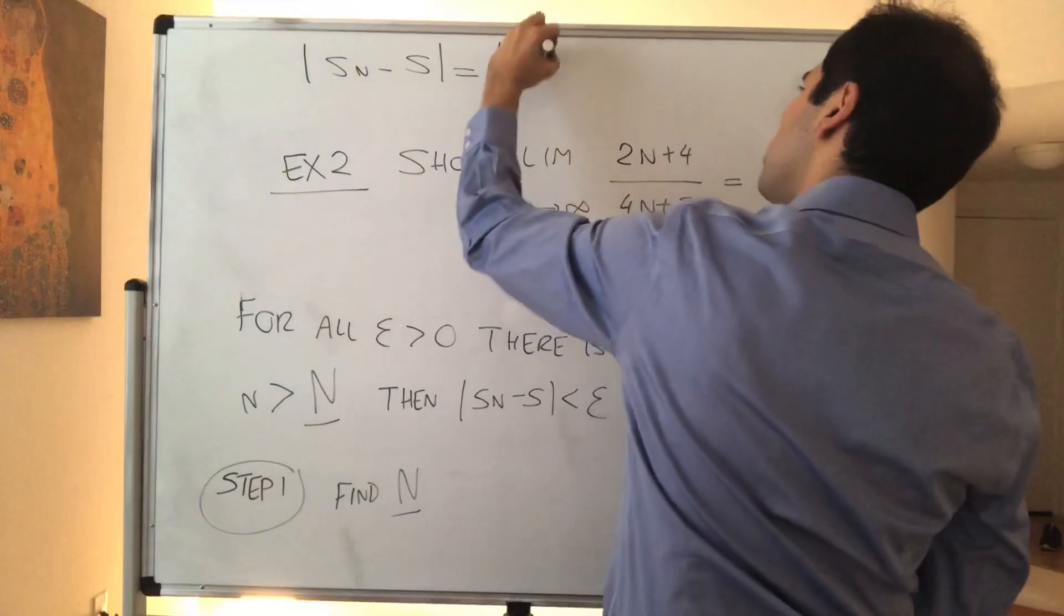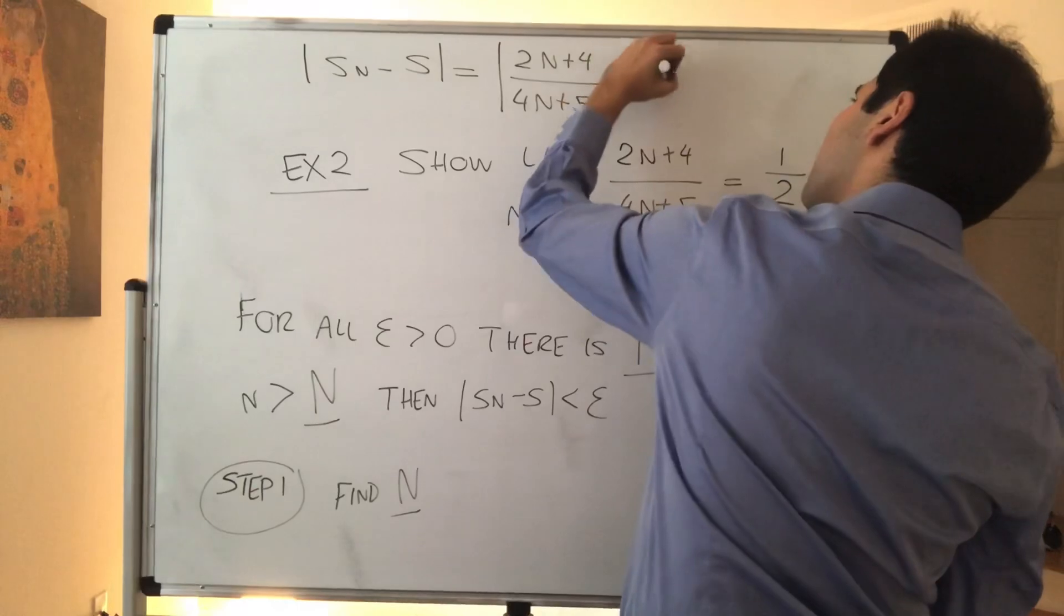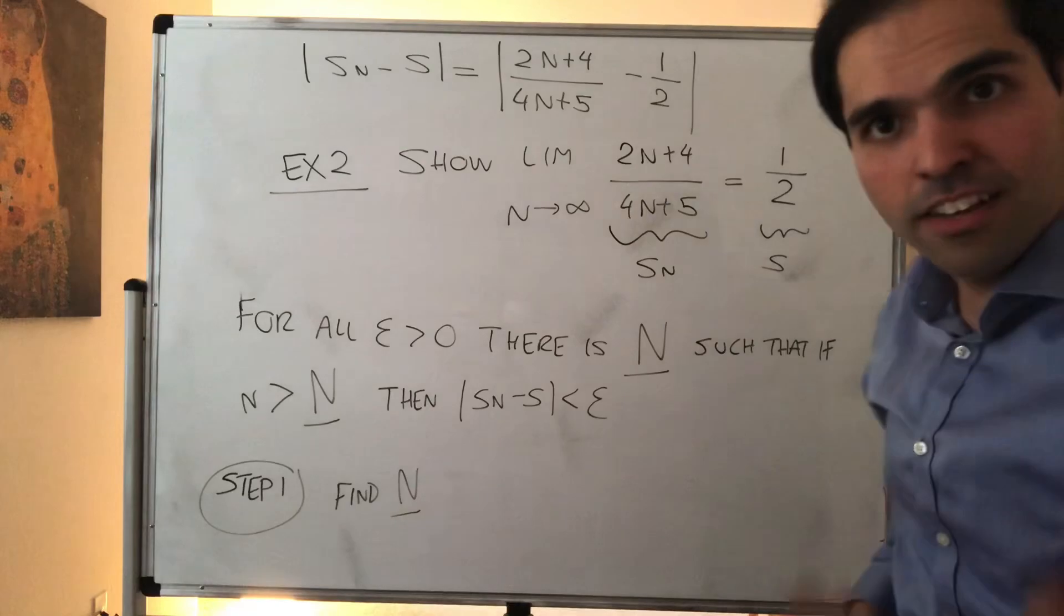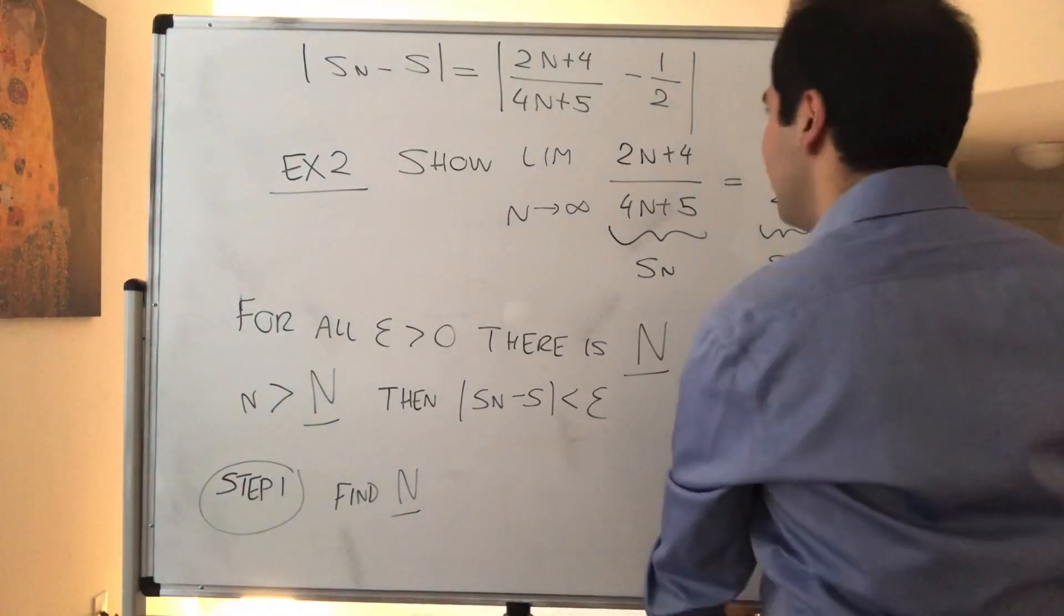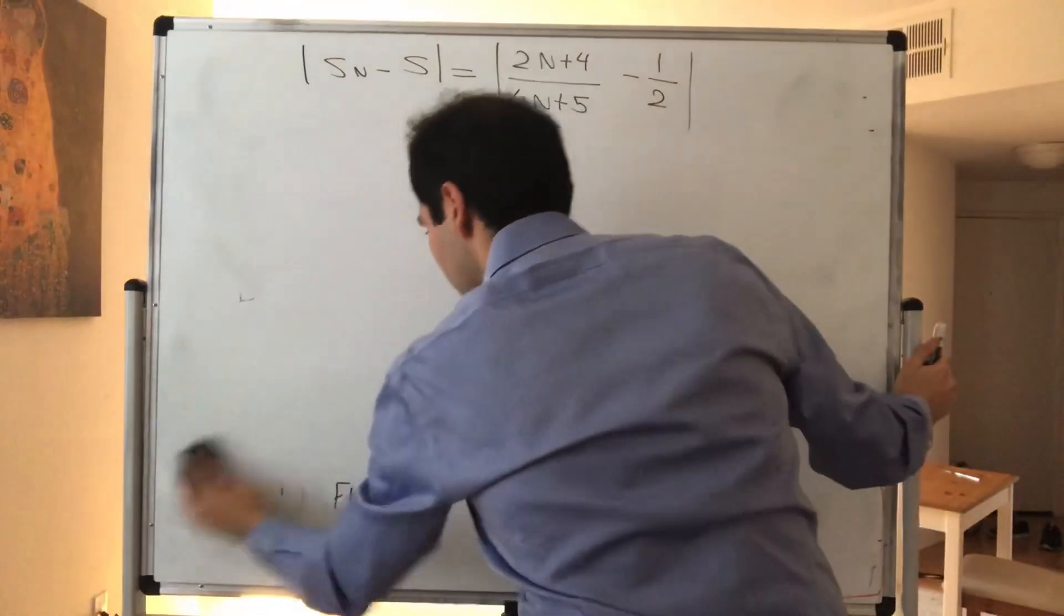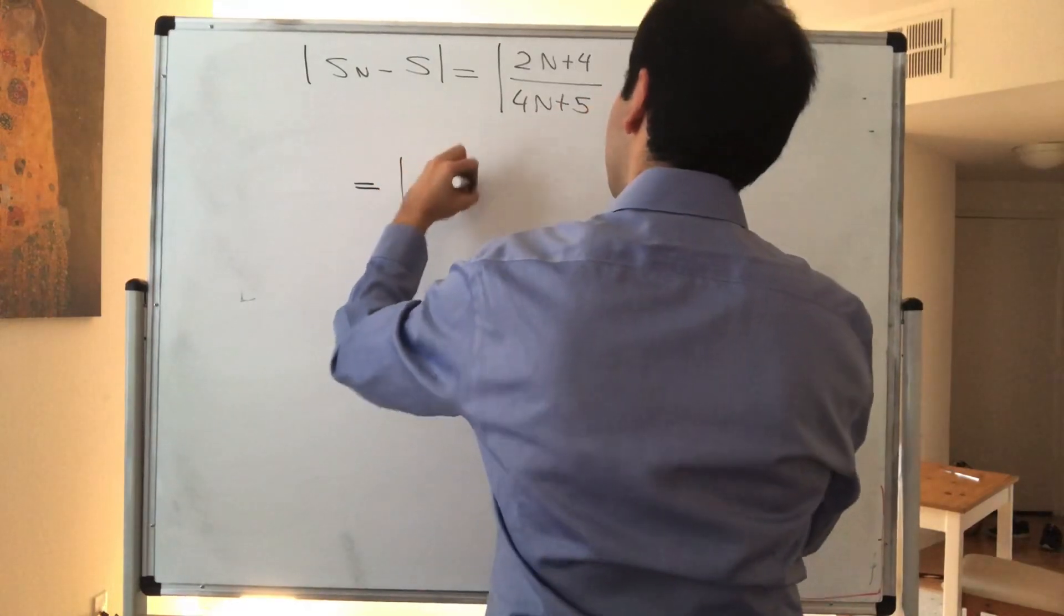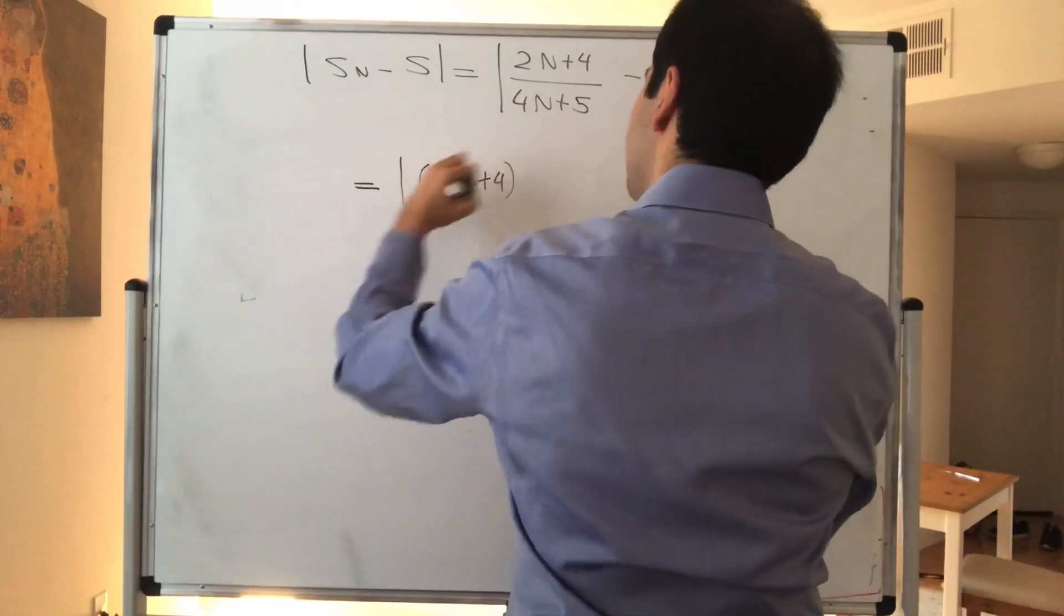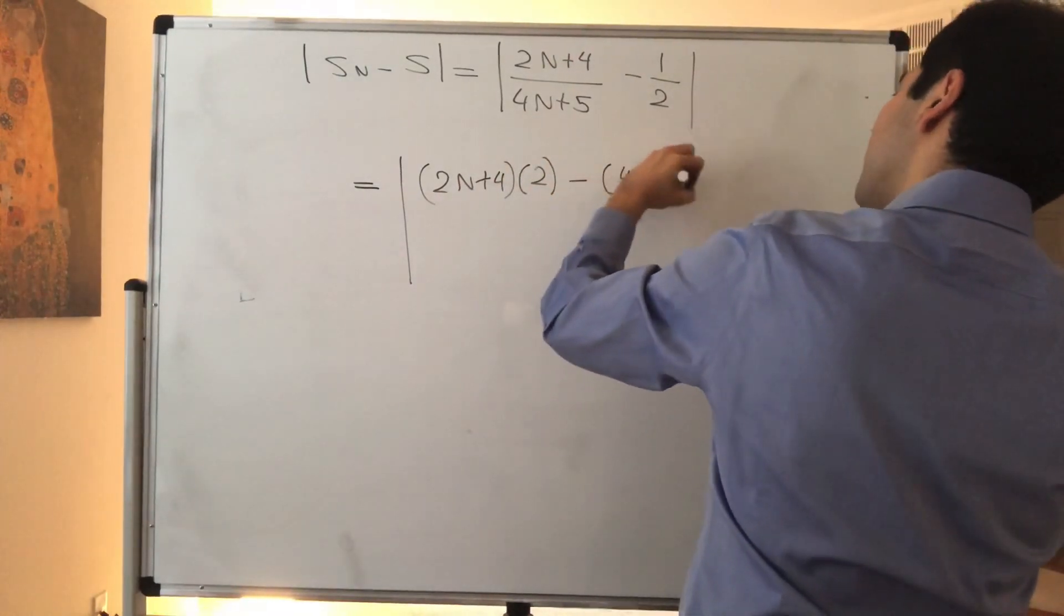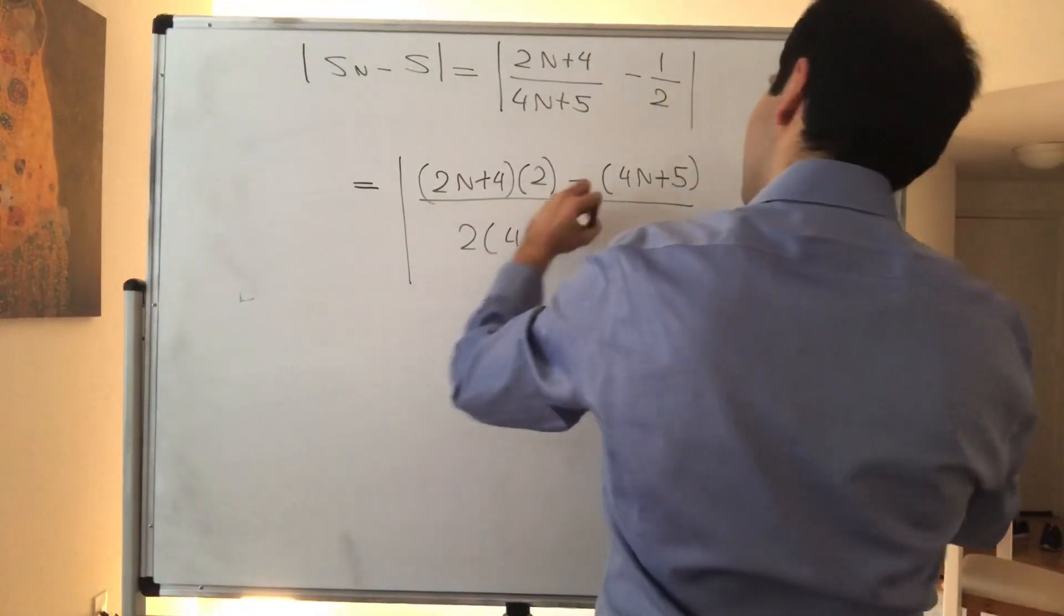so let's find Sn minus S, which becomes 2N plus 4 over 4N plus 5 minus 1 half. And let's simplify this a little bit by putting it on a common denominator. So this just becomes 2N plus 4 times 2, I believe, minus 1 times 4N plus 5